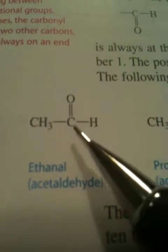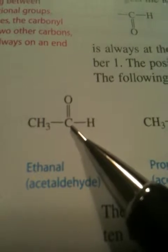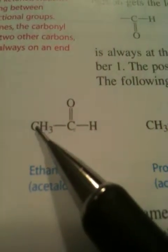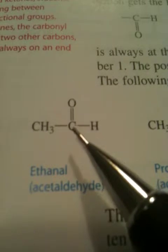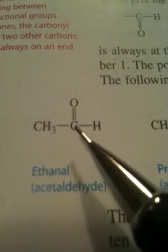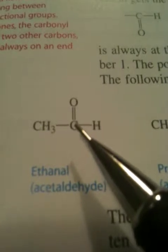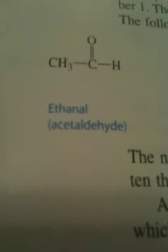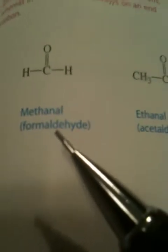Now let's look at the next example — ethanal. Why is this ethanal? Because we have the carbonyl group on the end. It has a hydrogen, and it's bonded to one other carbon, which makes it like ethane. We take the E off of ethane and add the AL ending, so this becomes ethanal. The common name for this is acetaldehyde, and the common name for the one-carbon version would be formaldehyde — that's what we use to pickle dead specimens in the bio labs.